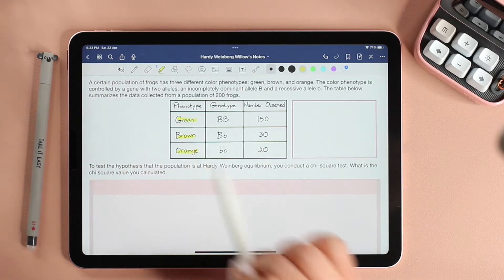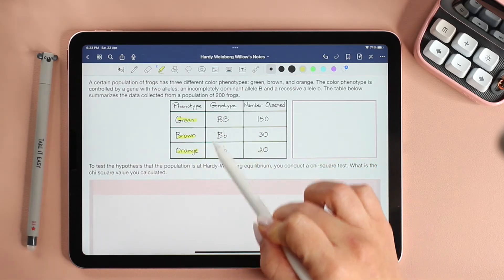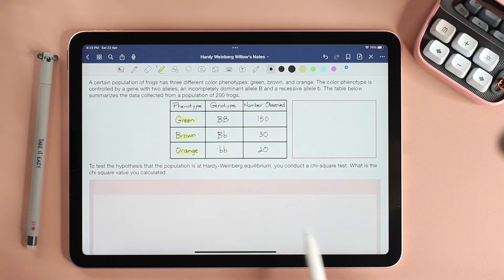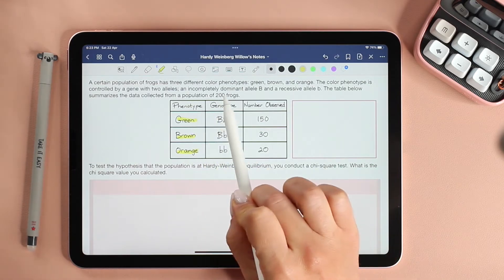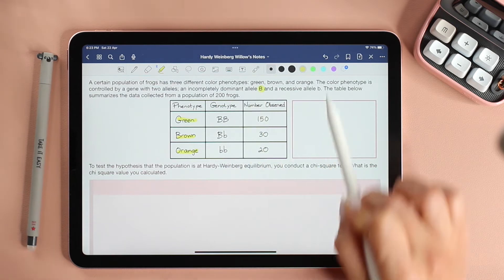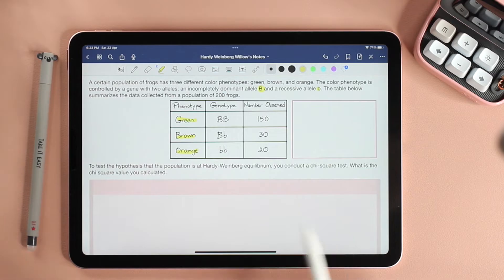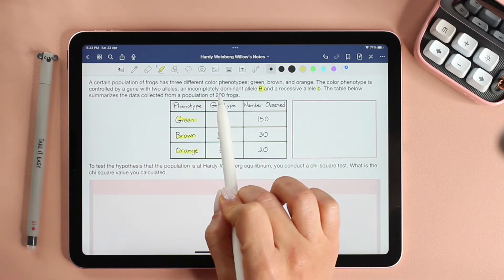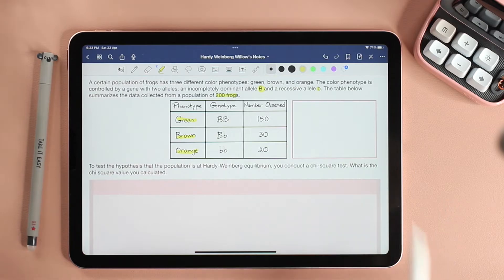A certain population of frogs has three different color phenotypes: green, brown, and orange. The color phenotype is controlled by a gene with two alleles, an incompletely dominant allele B and a recessive allele b. The table below summarizes the data collected from a population of 200 frogs.